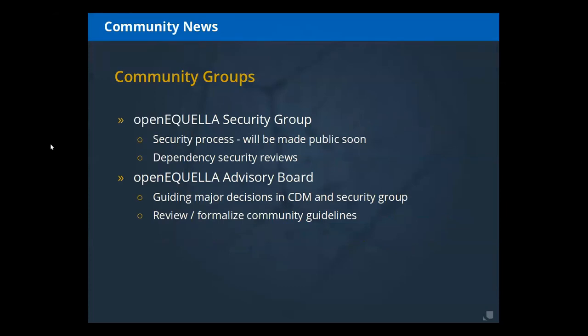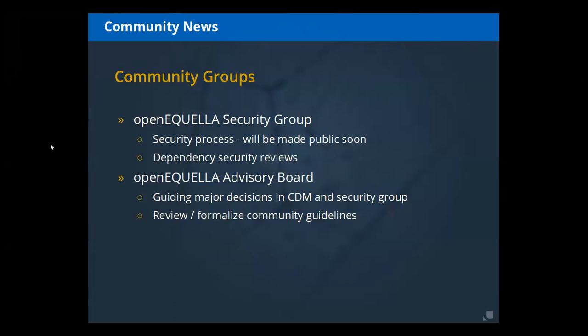The next group we track is the Security Group for Open Equella. We've been working on a security process that will be made public, aiming for mid-October. This will allow folks to work with commercial services providers such as Unicon or Edelaxe, or they can send an email to security@apereo.org without any financial commitment. The security group monitors that alias and the security process will explain what the responsibility of the group is — it is not necessarily to fix security issues, but to provide guidance.